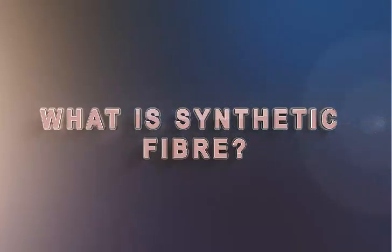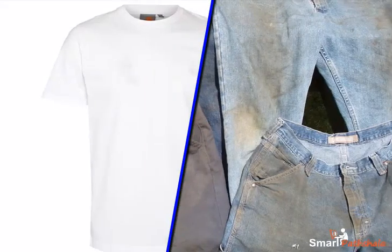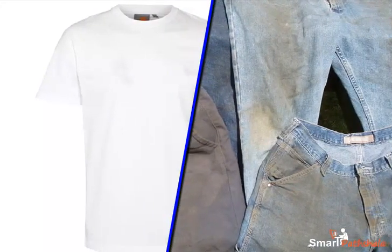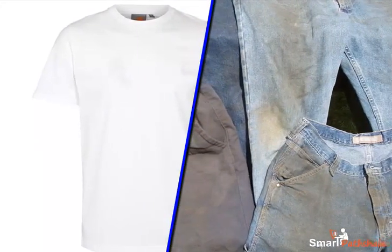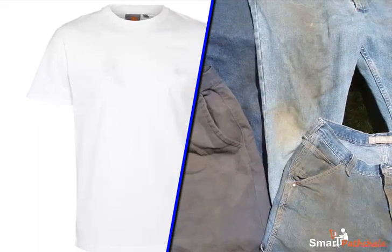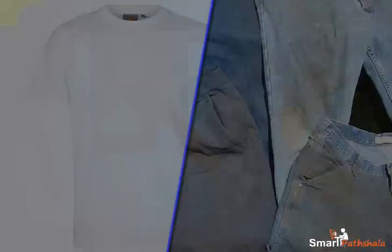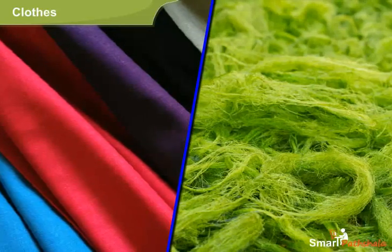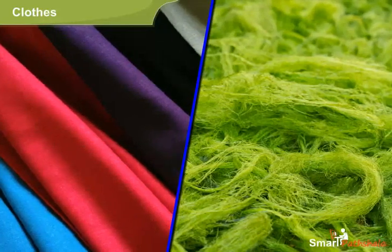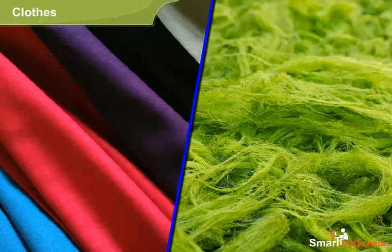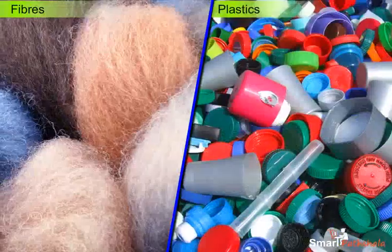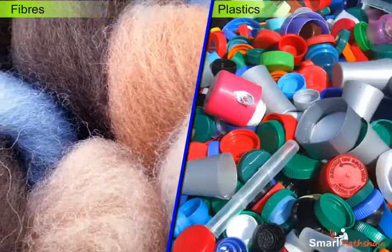What is synthetic fiber? We all wear clothes to protect our body from dust and sun. Let us know how clothes are made. Clothes are made of fabrics, and the fabrics are made of fibers. In this chapter, let us discuss about different types of fibers and plastics.